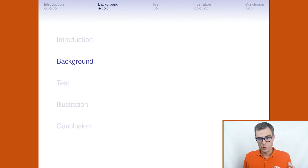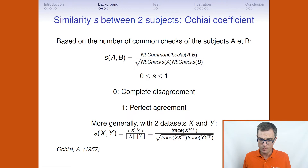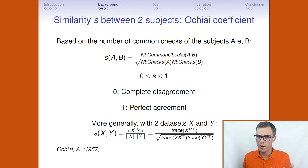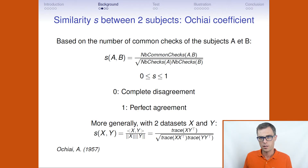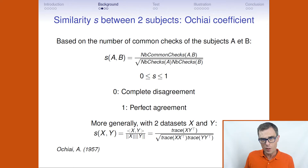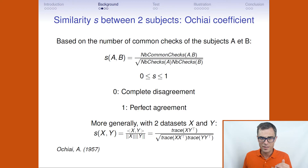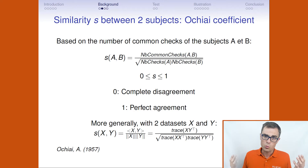Before I present the test, I have to present some background analysis. The similarity between two subjects is defined by the OKI coefficient, which is based on the number of checks between the two subjects. The similarity is between 0 and 1. More generally, when we have two datasets, the similarity is equal to the cosine between these two datasets — the scalar product divided by the product of their norms.